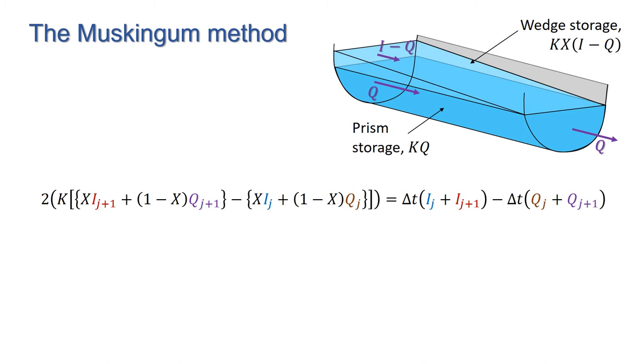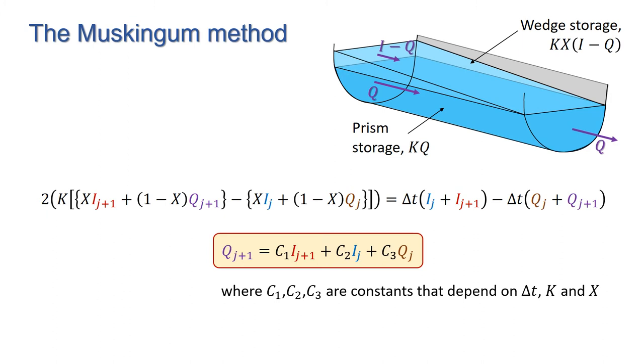We end up with an update equation of the form q_(j+1) equals c1·i_(j+1) plus c2·i_j plus c3·q_j, where c1, c2, and c3 are constants that depend on delta t, k, and x. I'm not going to go through the derivation of the constants here, but rather leave that for you to do as an exercise.